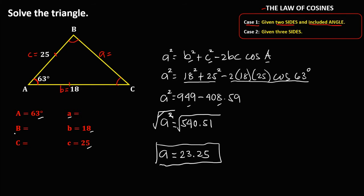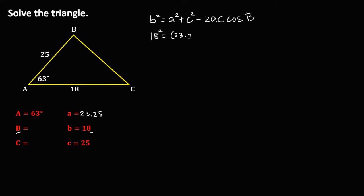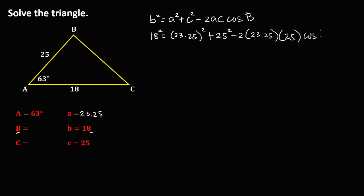To solve for angle B, since side A is now 23.25, we use the formula: B squared equals A squared plus C squared minus 2AC times cosine of angle B. Substituting: B squared equals 23.25 squared plus 25 squared, then minus 2 times 23.25 times 25 times cosine angle B.